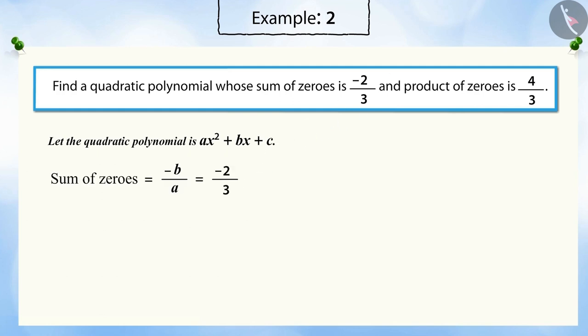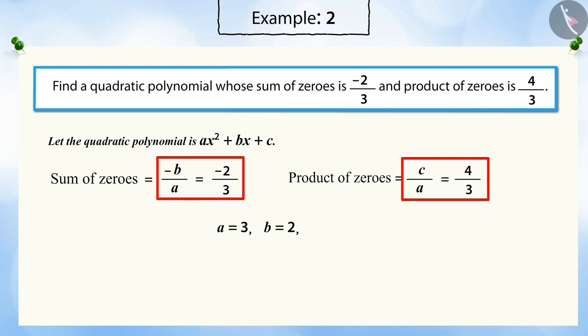We know that the sum of zeros is -b/a and the product of zeros is c/a. When compared, a = 3, b = 2, and c = 4.